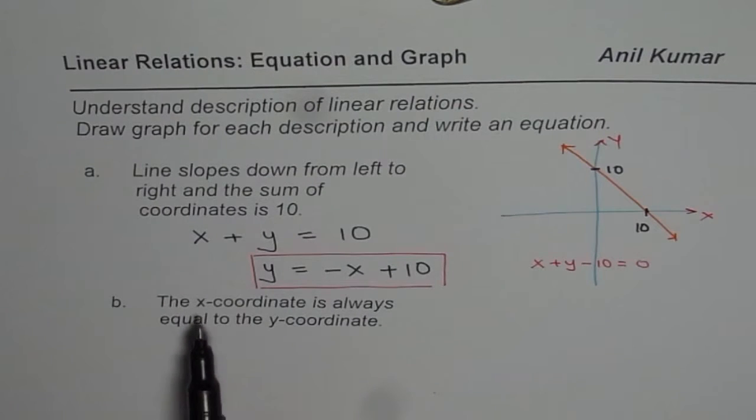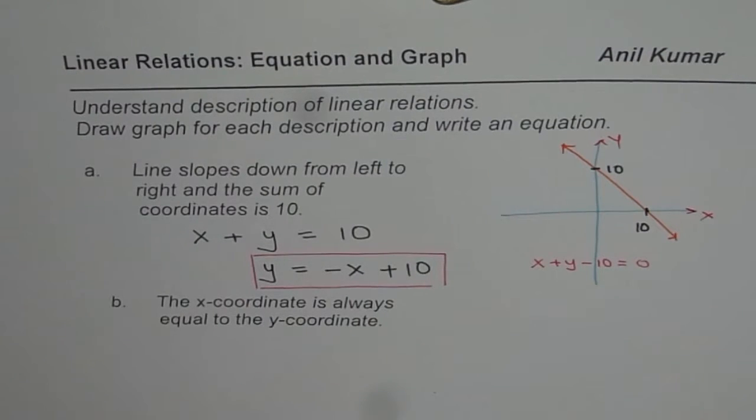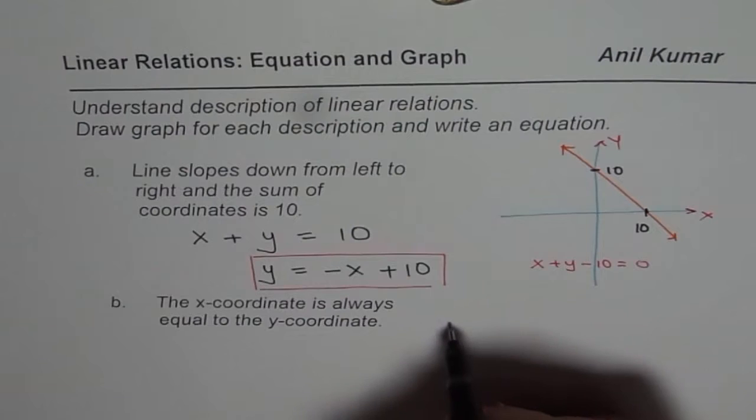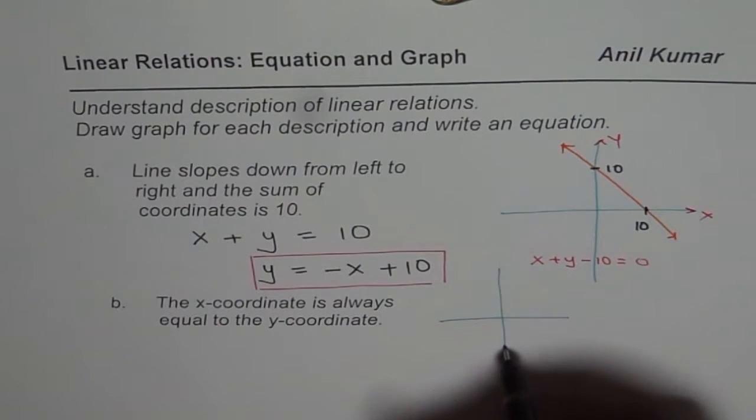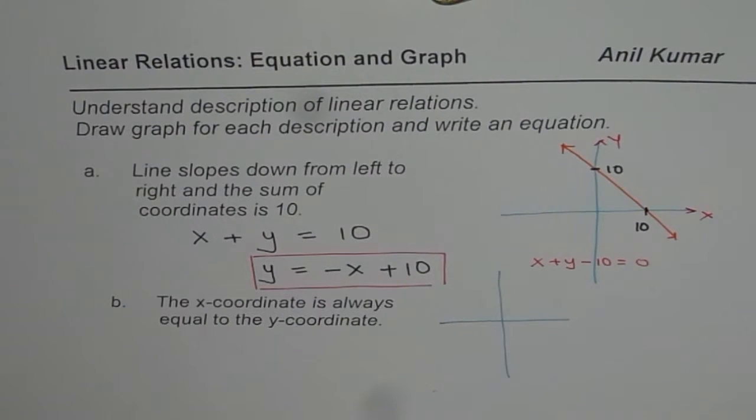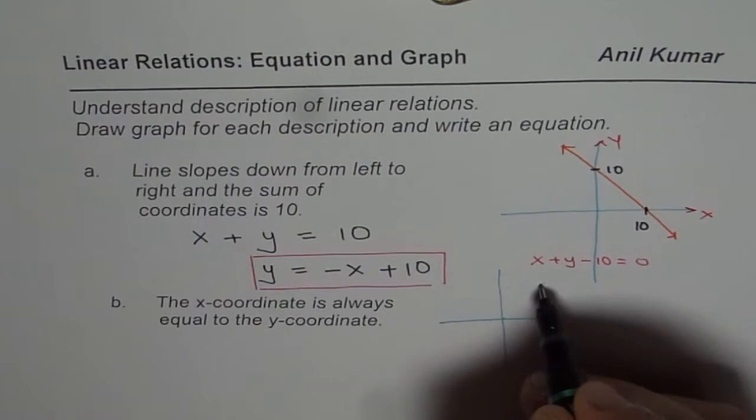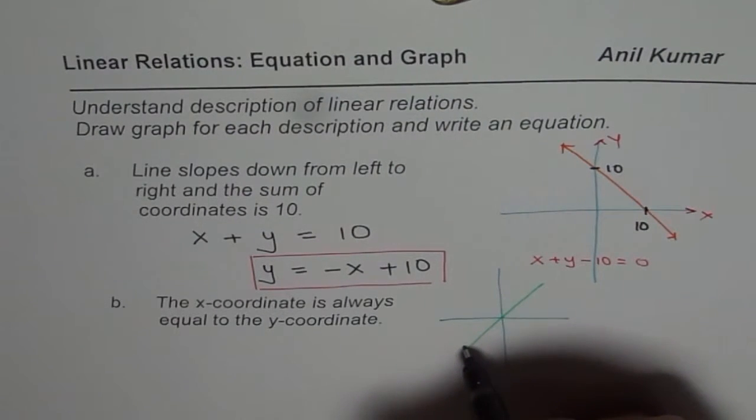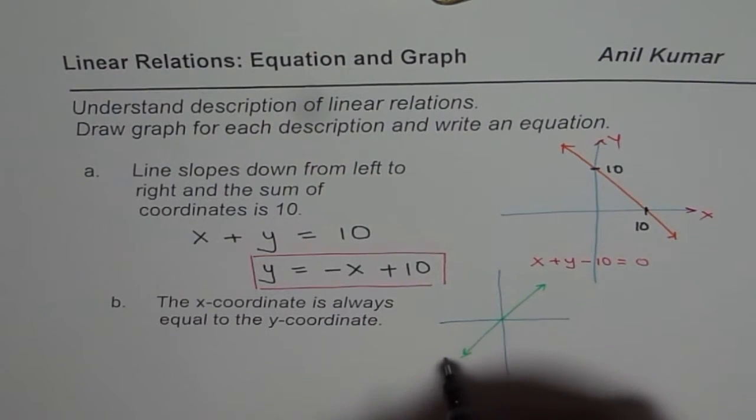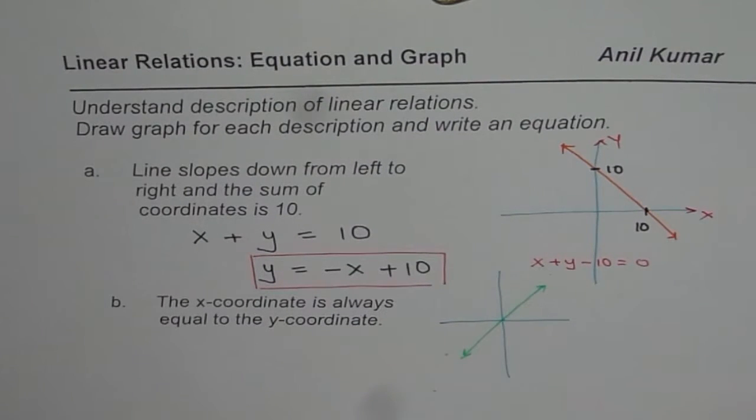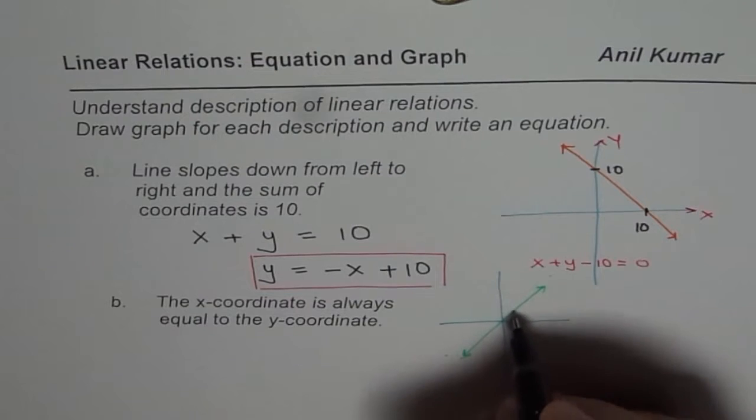Now part B is: the x-coordinate is always equal to y-coordinate. Now what does that mean? That means that the line actually goes diagonally and x and y coordinates are equal means it goes through from quadrant 3 to quadrant 1.